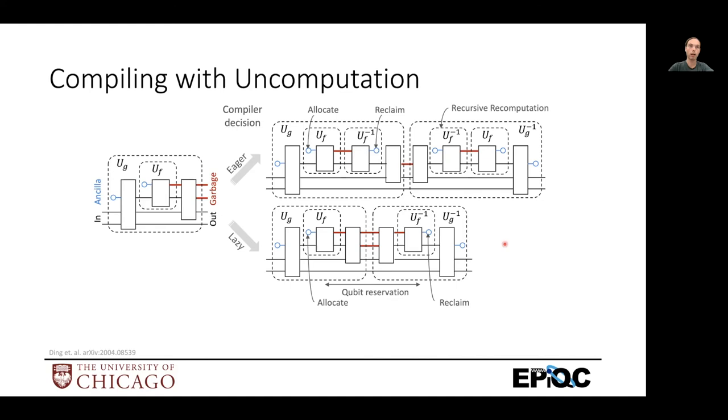And you can formalize this into a compiler pass or compiler technique, where, given this hierarchical program, you have multiple options. You can always immediately uncompute and reclaim those Ancilla for somewhere else in your computation, like here. And then, so in this middle of the circuit here, you can now use these Ancilla or half of these Ancilla for some other part of the calculation. Or you can just hold on to those dirty Ancilla that you've used until you're all the way done with your whole computation and then only uncompute at the end. And this takes more Ancilla because other parts of your computation might need Ancilla.